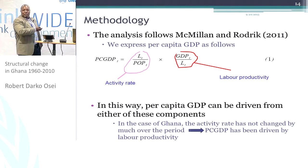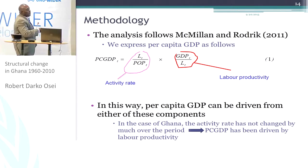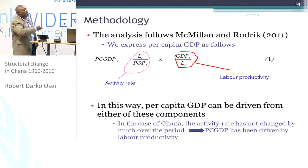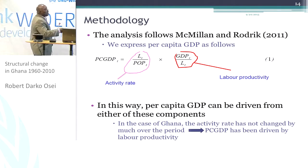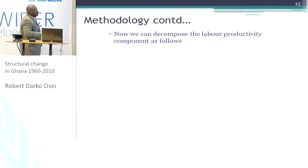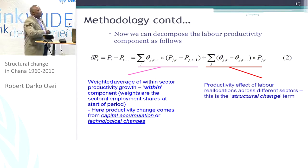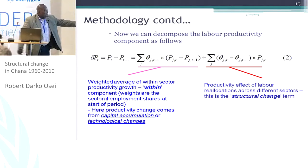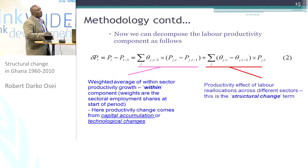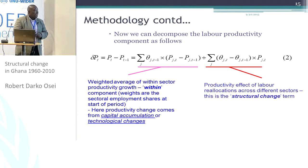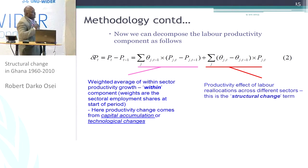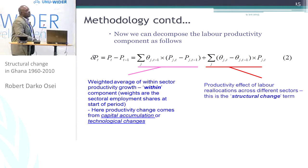Per capita GDP is a component of two things: labor productivity and the activity rate. For Ghana, the activity rate has remained at about 40% over the period, so it hasn't changed by much. So for per capita GDP, what it suggests is that what is actually changing is the productivity. The changing productivity is decomposed into the within-sector productivity growth, but also the productivity growth which results from the reallocation of labor across the different sectors. That's some of the results that Maggie showed, essentially based on this decomposition.